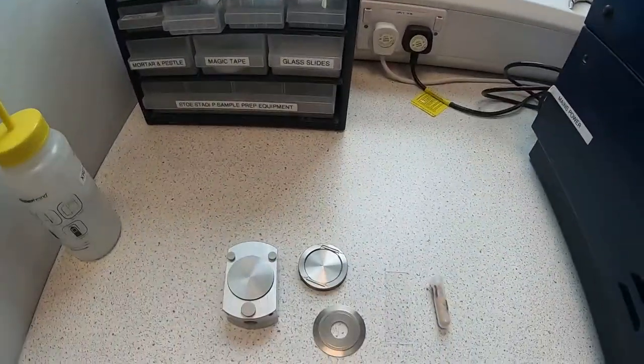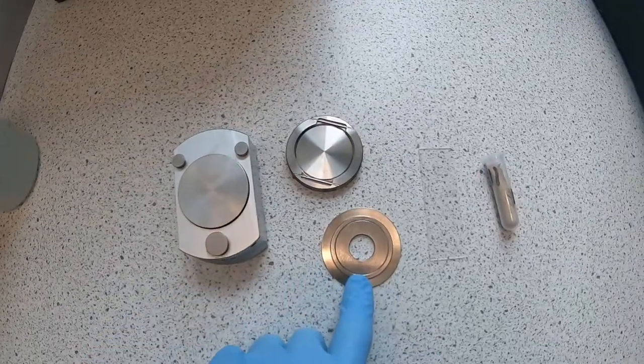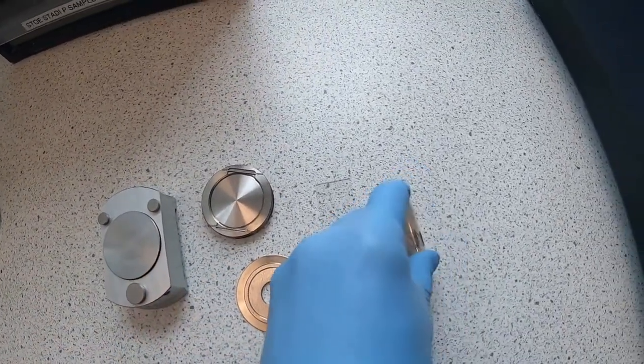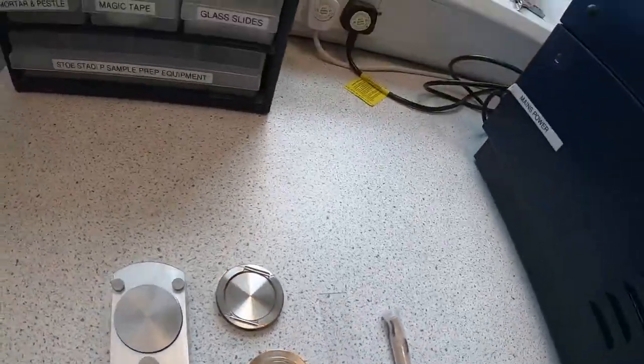Now we're going to quickly move on to how to fill a powder sample. You'll need a few things here: the mount, the sample ring, the sample bank, a glass slide, and our powder. Now I'll put the camera here so you can see what I'm doing.